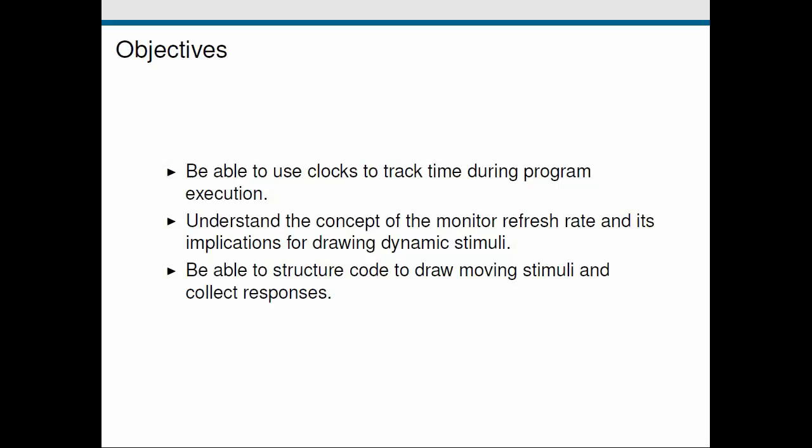In previous lessons we've usually only considered situations where the stimuli are static. There's a simple time course to the code where we usually just wait for the participant or user to press a key to finish the program. However in vision science experiments we often want to show moving or dynamic stimuli and show them with a complex and structured presentation schedule. To do that we first need to think about how we can handle time in Python and in PsychoPy.